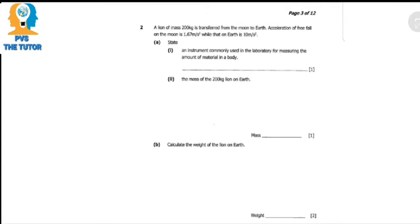Part A says state an instrument commonly used in the laboratory for measuring the amount of material in a substance. Now you know that the amount of material in a substance, that's what defines mass. And you know that mass is the amount of material in a substance.